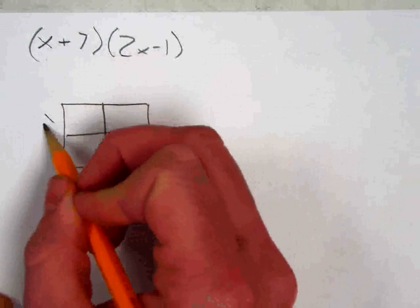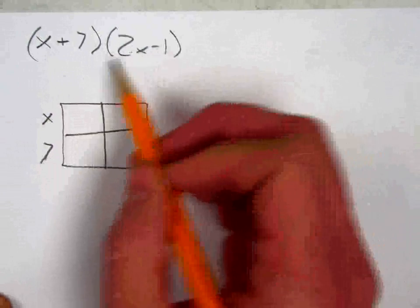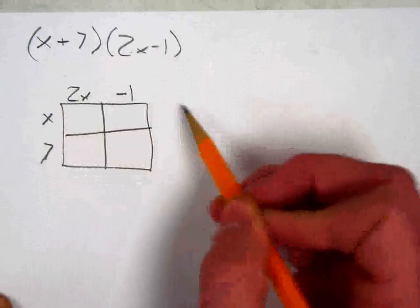Then I'm going to list one of my factors over here, x, and it's a positive 7, so I'm just going to list a 7 right there, and then 2x minus 1.